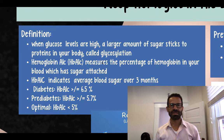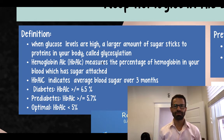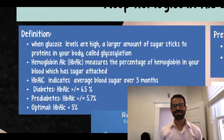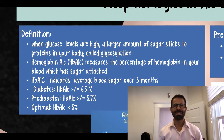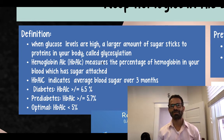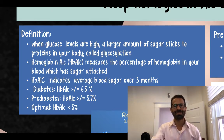Start with the definition. When your blood sugar or glucose is high, a larger amount of sugar sticks to proteins in your body. This is called glycosylation. Hemoglobin A1c is a laboratory test that can measure the percentage of your hemoglobin in your blood that has sugar attached.